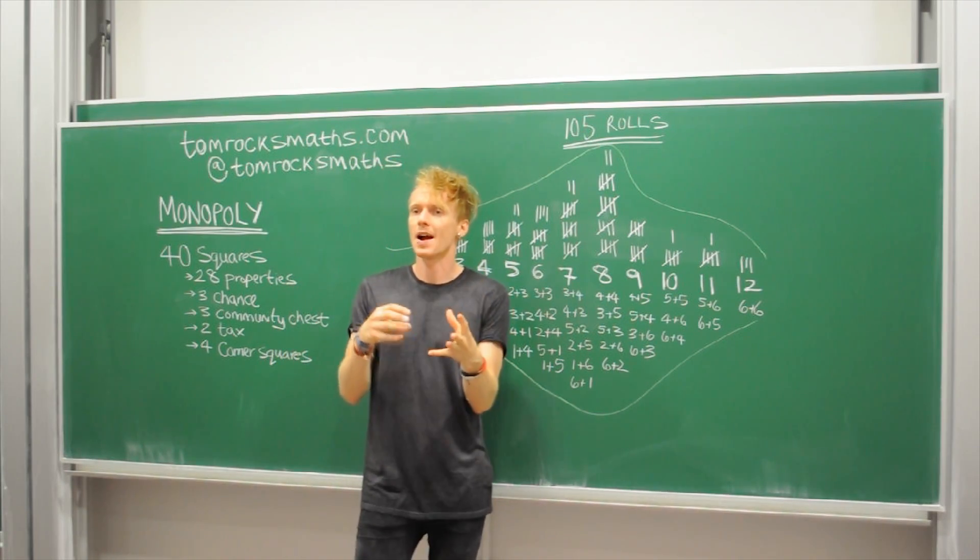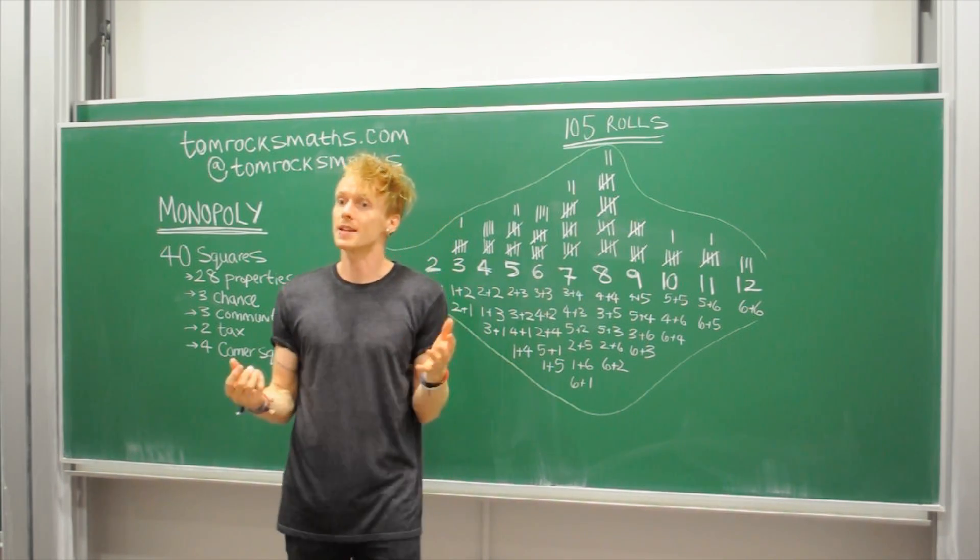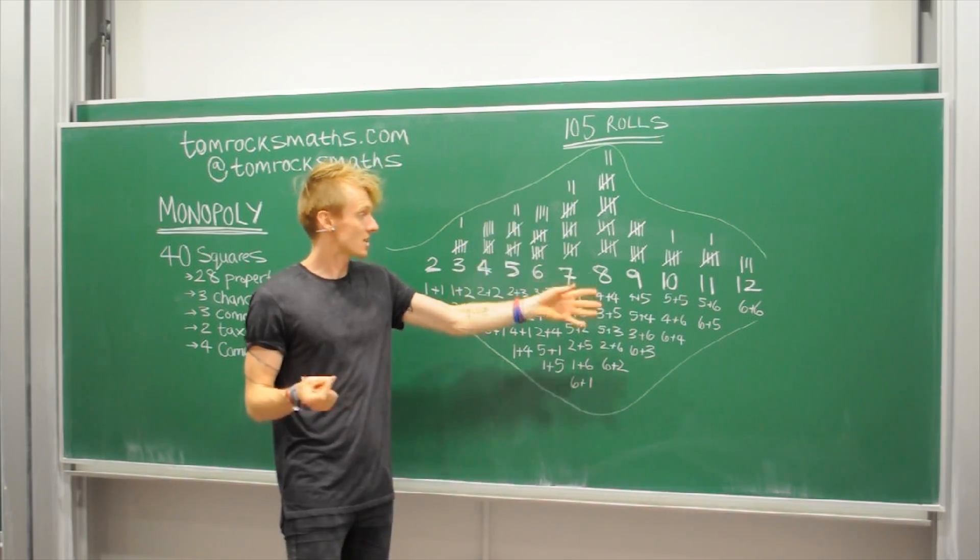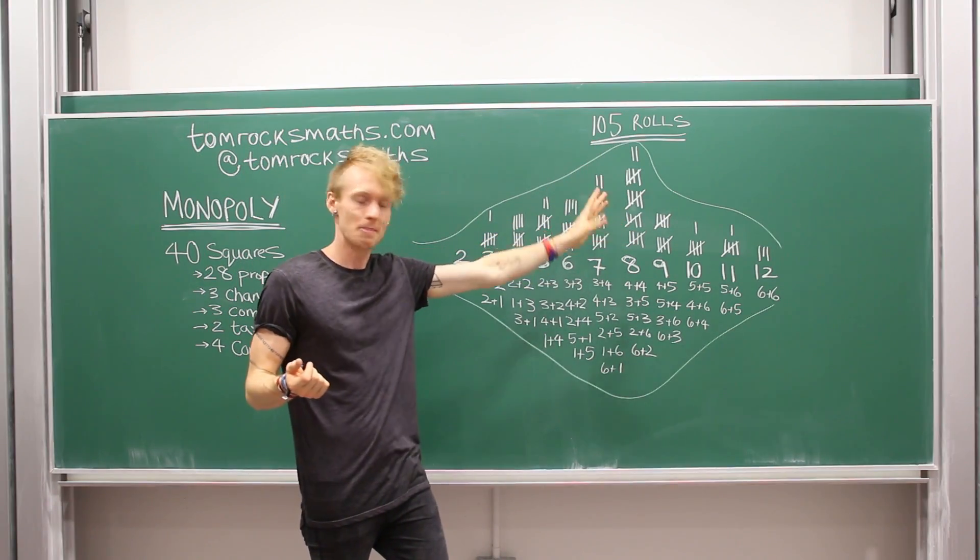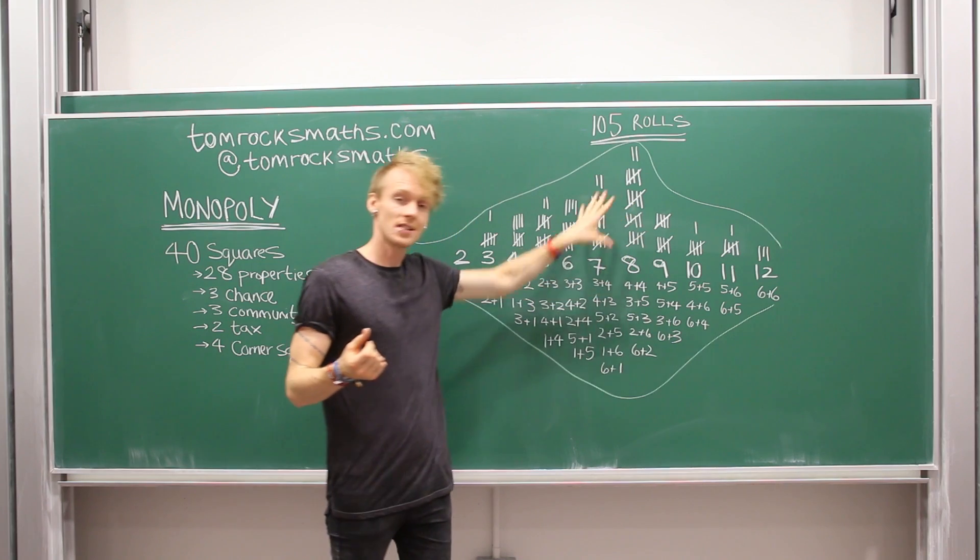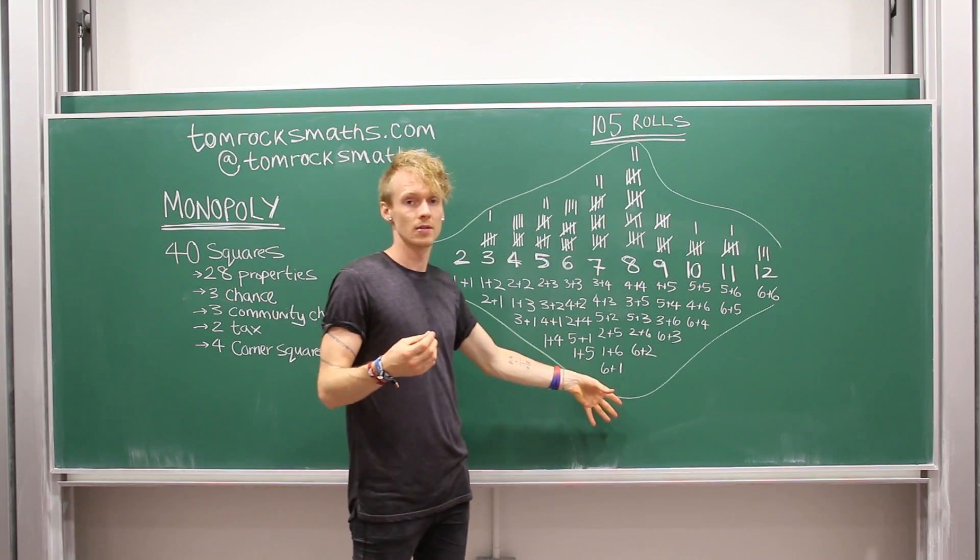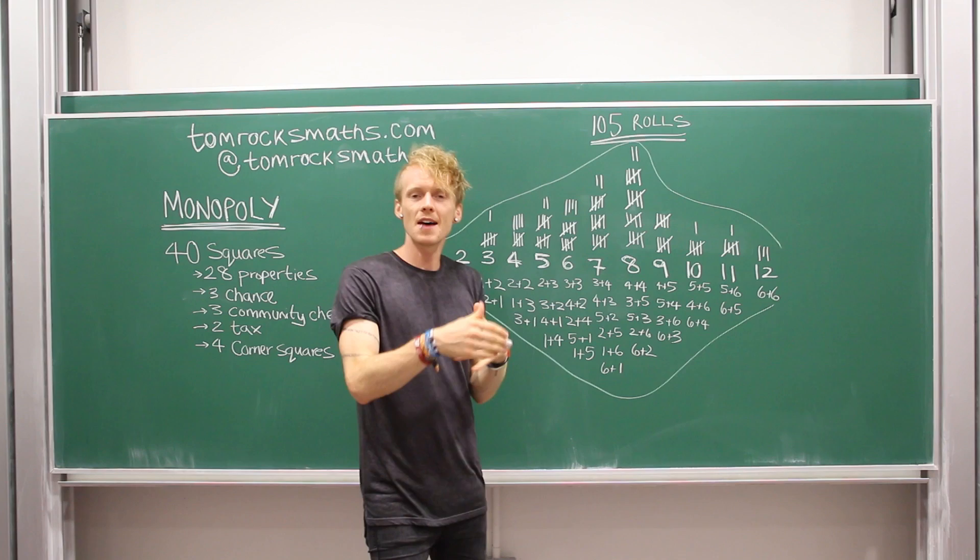And then we wanted to figure out what is the most likely roll next time they get a go. And we actually found from my experiment it to be eight. But if you look at the general distribution it should be seven according to probability.